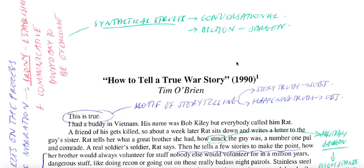We're going to look at the story from The Things They Carried, 'How to Tell a True War Story' by Tim O'Brien. The three central features of this particular story — the distinctive prose conventions — are narrative digressions, the unorthodox use of narrative voice, and the motif of storytelling.